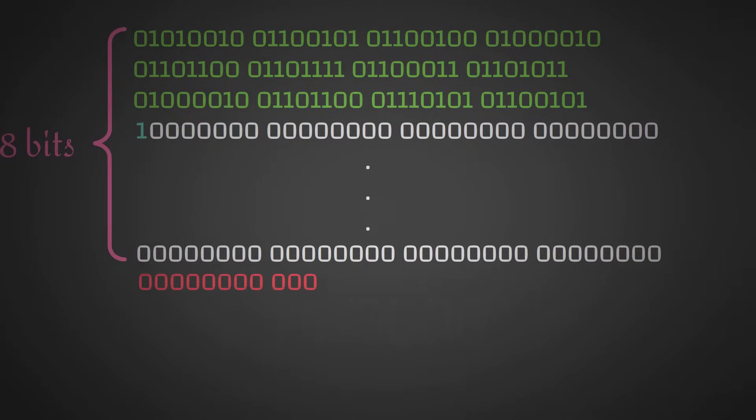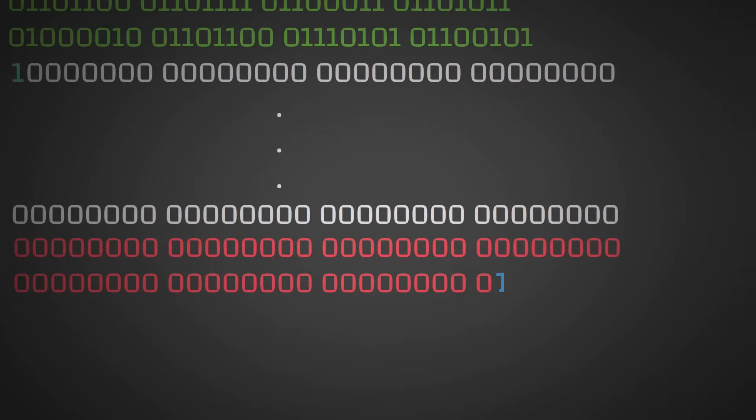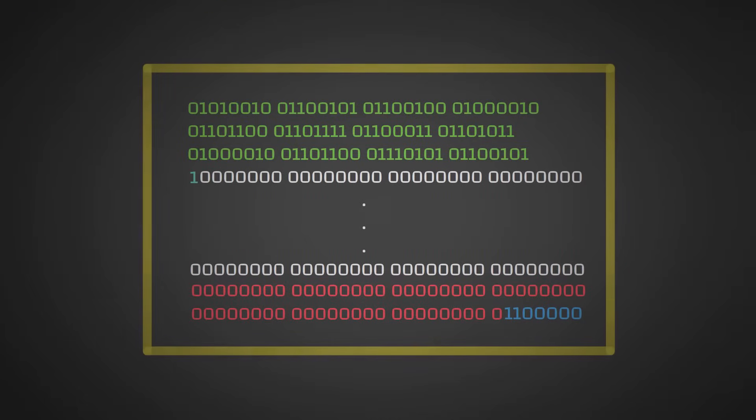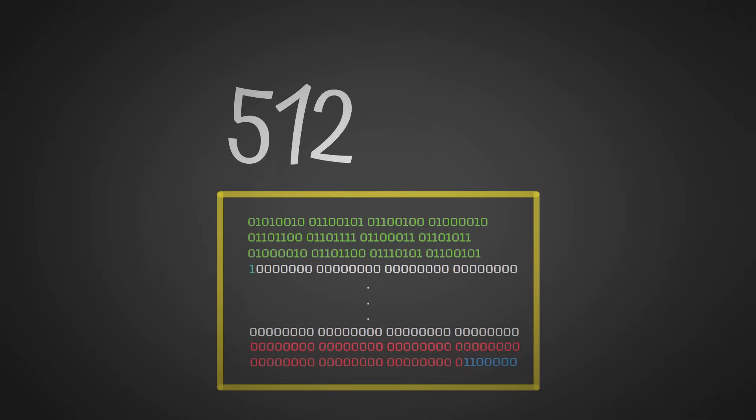Because we're using 64 bits to represent this, we have a load of 0s at the beginning, and then we have 110000. So now we have our padded input of 512 bits.